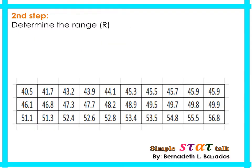For the second step, determine the range using the formula: highest minus lowest. Our given data is already arranged from lowest to highest. You have to note that before solving the range, your data must be arranged from lowest to highest. Our highest value is 56.8 and the lowest is 40.5, giving us a range of 16.3.